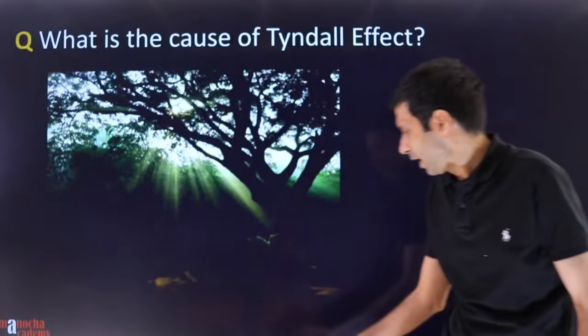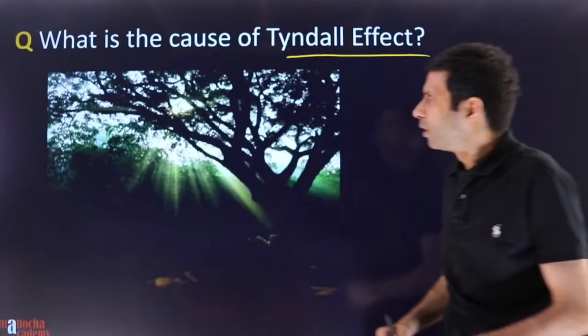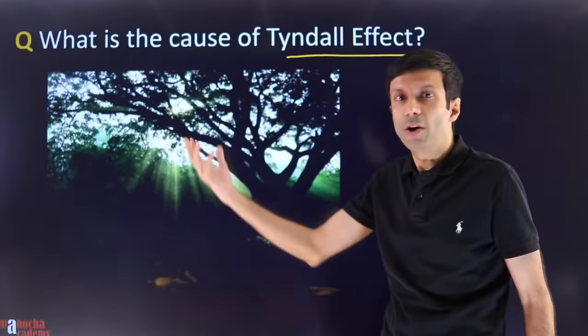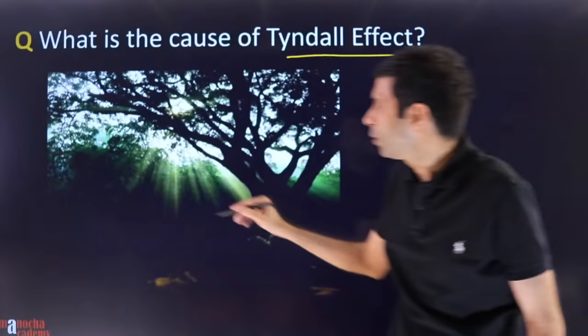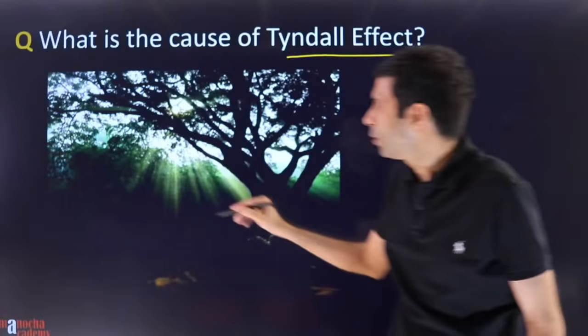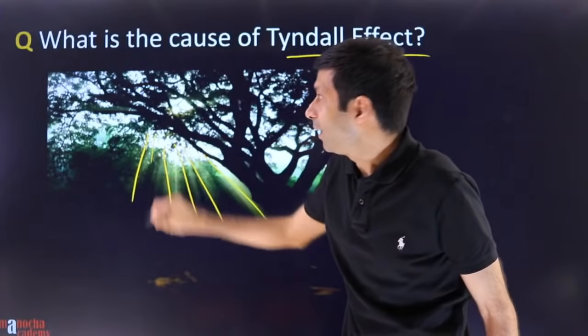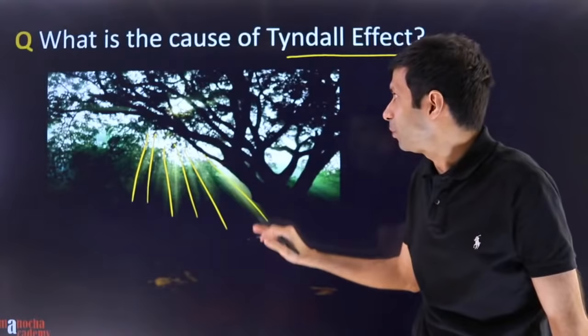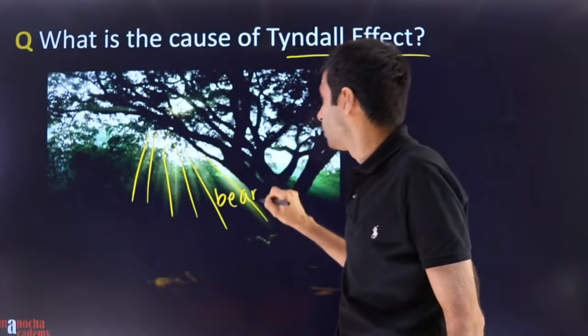You may have seen this phenomena before — it's called the Tyndall effect. When there is dust in a room, you can see a beam of light. Normally, light is invisible — we see things through light, but you cannot see the beam of light itself. Sometimes, when dust is present, the light seems to become visible and you can see the beam. This is called the Tyndall effect.